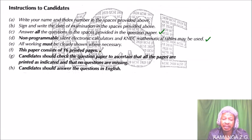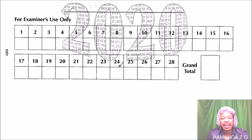This paper consists of 16 printed pages—very important to confirm that so you have all the questions you need to answer. Candidates should check the question paper to ascertain all the pages are printed as indicated and that no questions are missing. Candidates should answer the questions in English. Do not write in Sheng or Swahili.